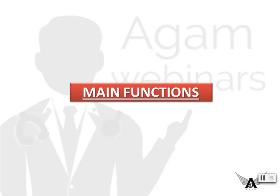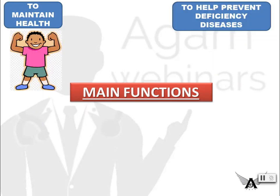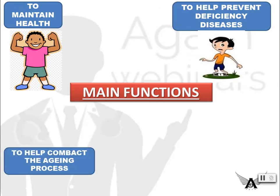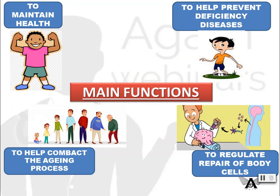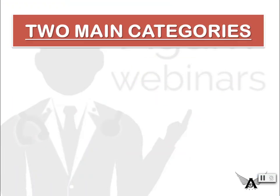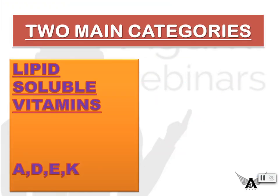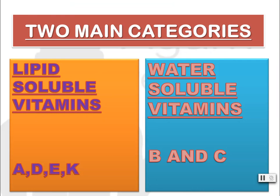The main functions of vitamins are to maintain health, to prevent deficiency diseases, to help combat the aging process, and to regulate repair of body cells. The two main categories of vitamins are lipid-soluble vitamins and water-soluble vitamins.